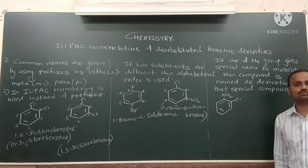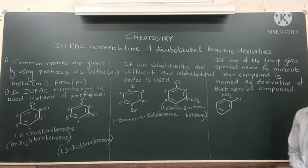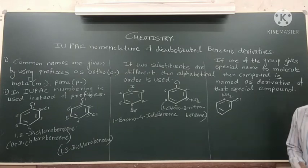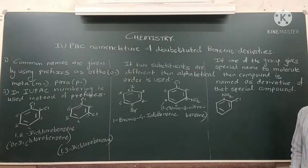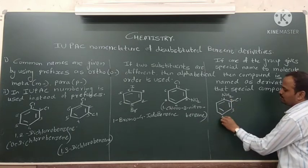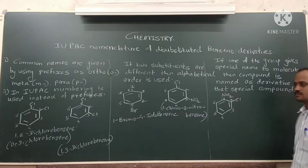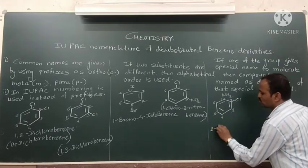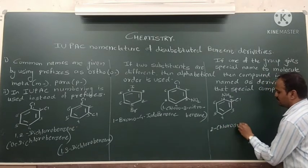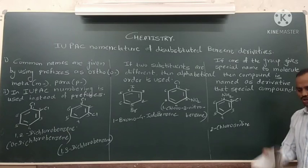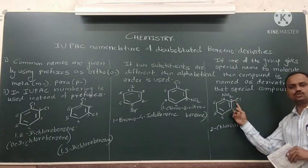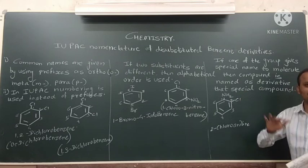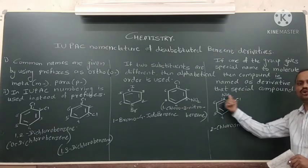For example, a benzene ring attached to NH₂ — as we studied in the previous lecture — is called aniline. So the parent compound is aniline, and chlorine is attached to it. Numbering the ring 1 through 6, with chlorine on the second carbon, the IUPAC name is 2-chloroaniline. The common name is ortho-chloroaniline, since chlorine is at the ortho position relative to NH₂.